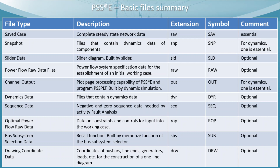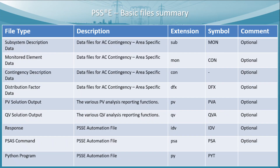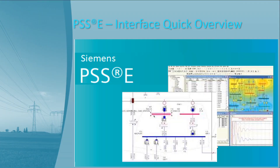Power flow raw data files, channel output files, and dynamic data files are all necessary to solve and start your case from scratch, and to perform steady-state and dynamic analysis. All other files are used in different types of analysis such as contingency analysis and PV/QV curve analysis. These files will be covered in detail in upcoming webinar sessions.